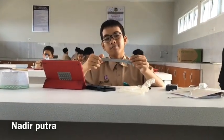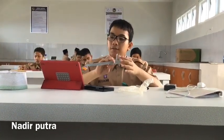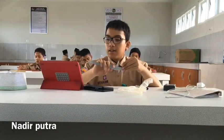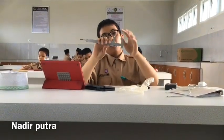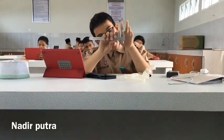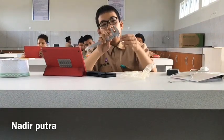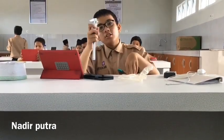Assalamualaikum warahmatullah wabarakatuh, hello everybody. So today I'm going to tell you about this vernier caliper. The first is the outside jaws. It's used to measure the outer diameter of an object and it looks like this. Secondly, it's the inside jaws.